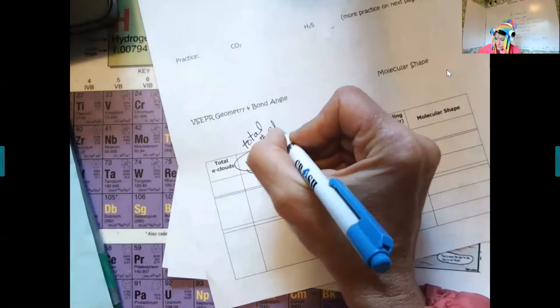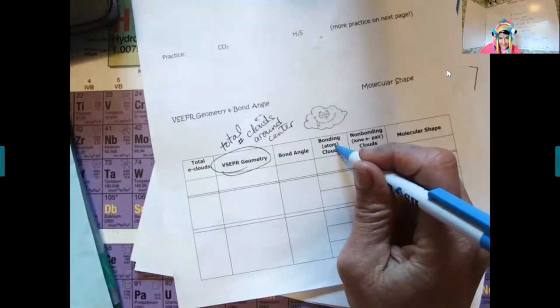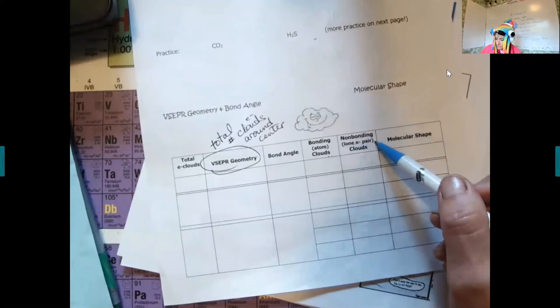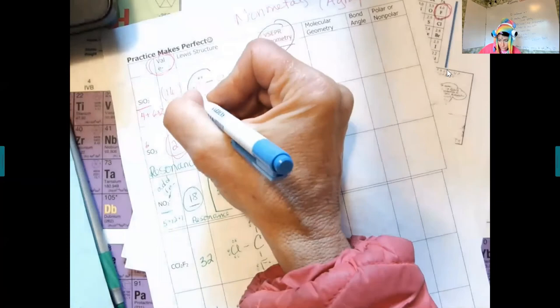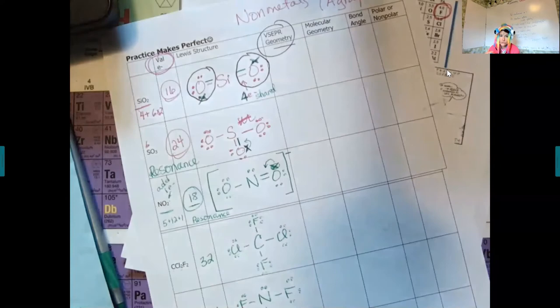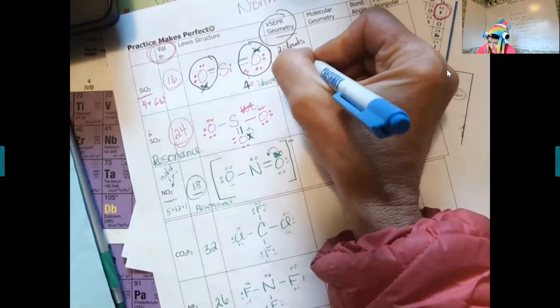The VSEPR geometry is the total number of clouds around the center. They're called electron clouds, and it's about what's around the center. Everything's about the center. You can either have atoms attached to the center — I call them atom clouds or bonding clouds — or you can have lone electron pairs on the center, which are non-bonding clouds. When you have two clouds total, this is called linear. The bond angle is 180 degrees.